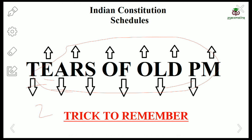The third schedule talks about Oath and Affirmation. The Oath and Affirmation covers MPs — members of Parliament — MLAs, Union Ministers, State Ministers, High Court and Supreme Court judges, and the CAG. So Oath and Affirmation deals with the third schedule.